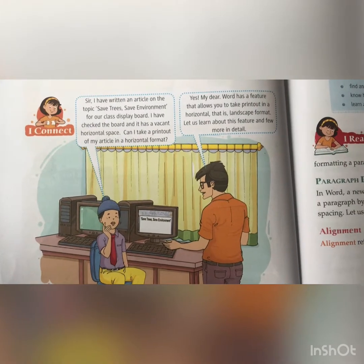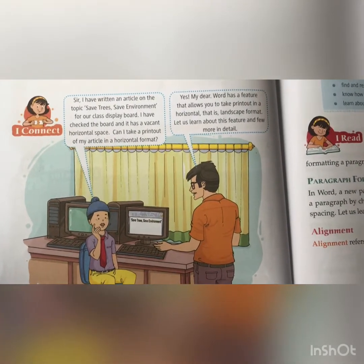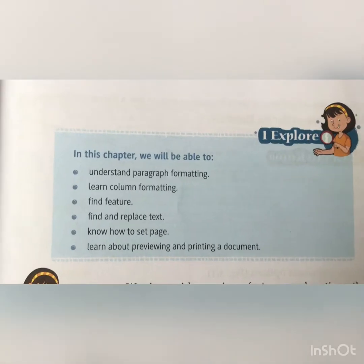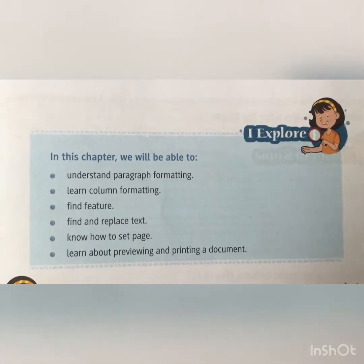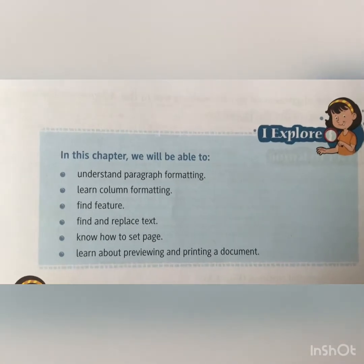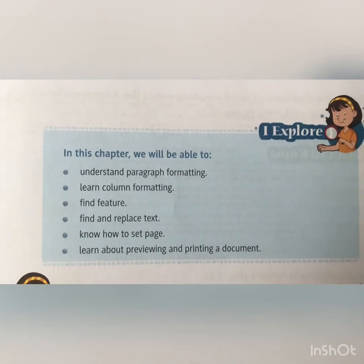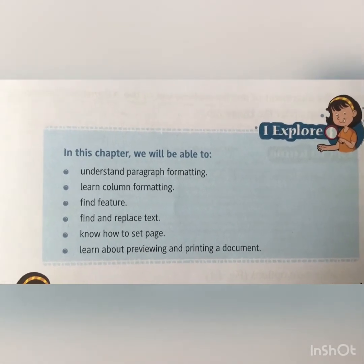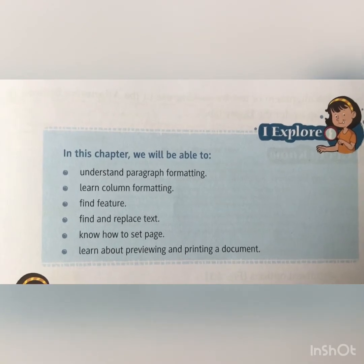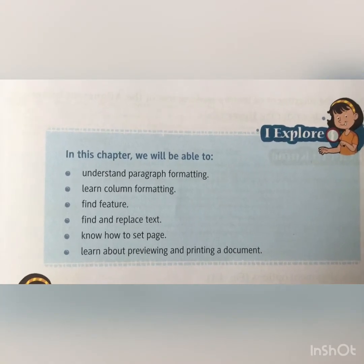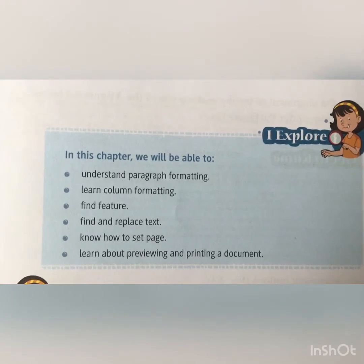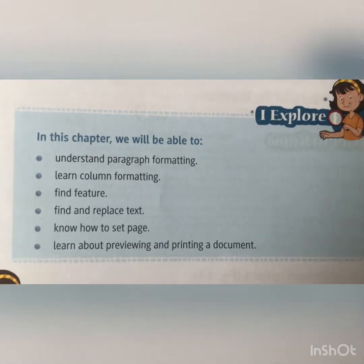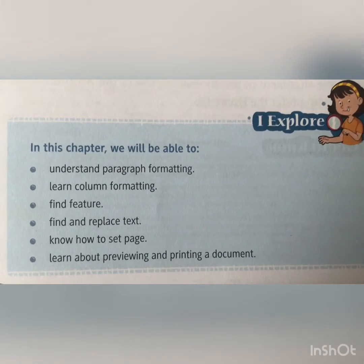We will start with print landscape format. We are going to learn column formatting, find features, find and replace text, know how to set pages, and learn about previewing and printing a document. So we are going to see the formatting in Word 2013 using this chapter.